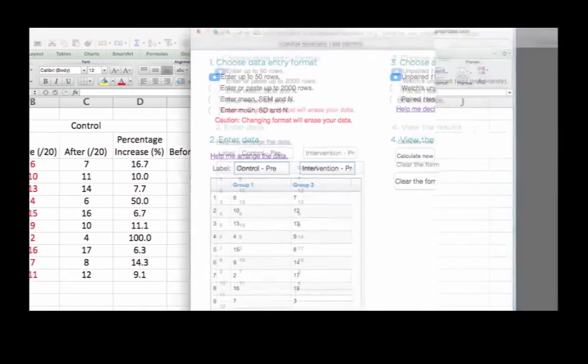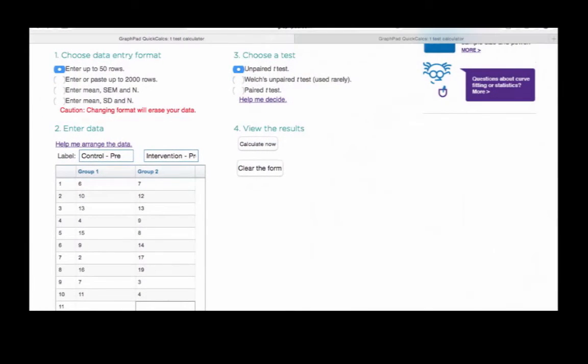To carry out the t-test, we choose an unpaired t-test because we have two independent groups—a control and an intervention—thus they are unpaired. That's as opposed to having one group that you tested at two different time points, which would be a paired t-test.